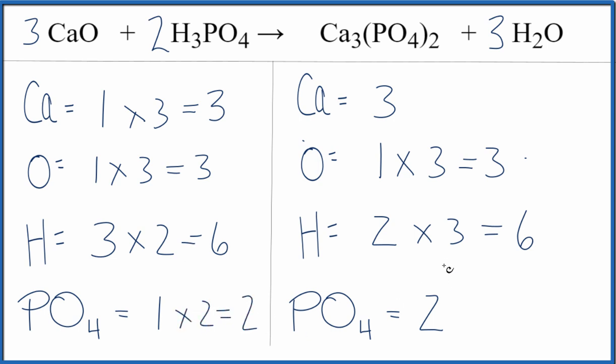And now this equation is balanced. So by counting the phosphate ion as one thing, that's made it quite a bit easier for us to balance this equation. This is Dr. B with the balanced equation for calcium oxide plus phosphoric acid. Thanks for watching.